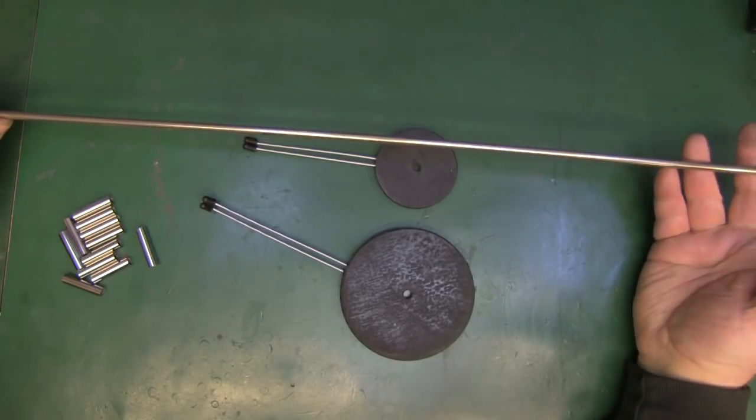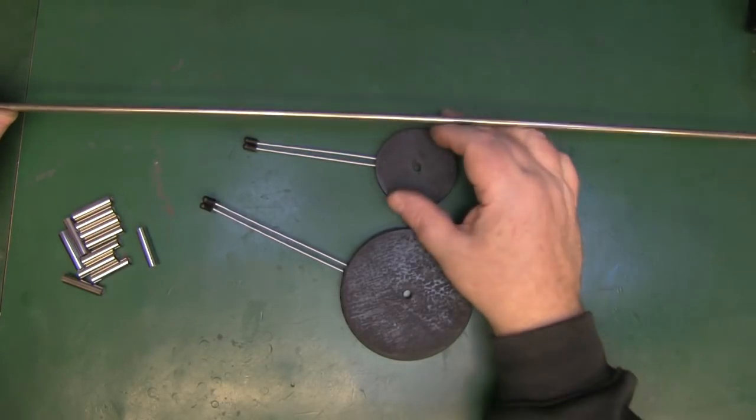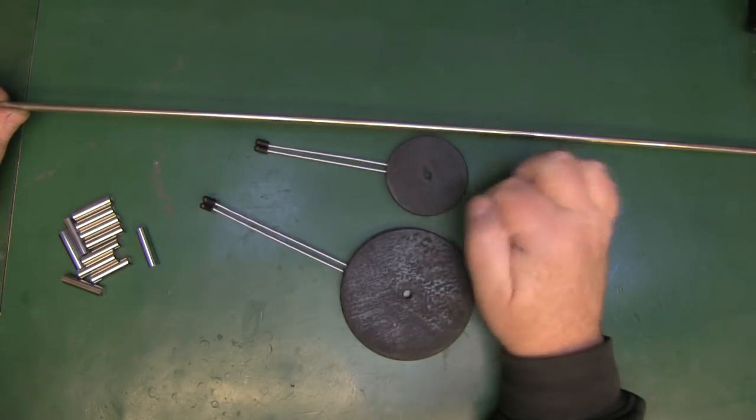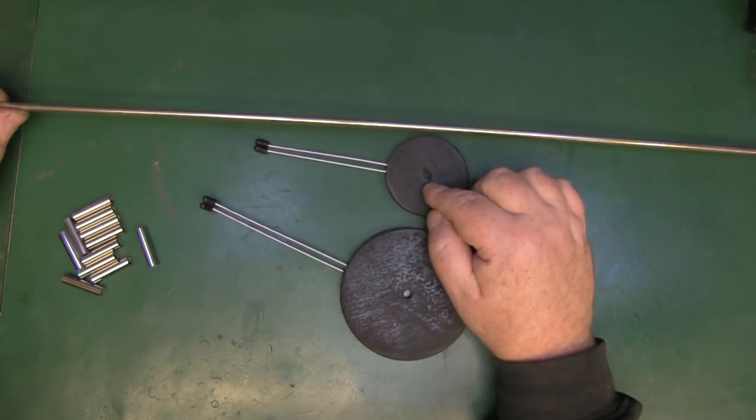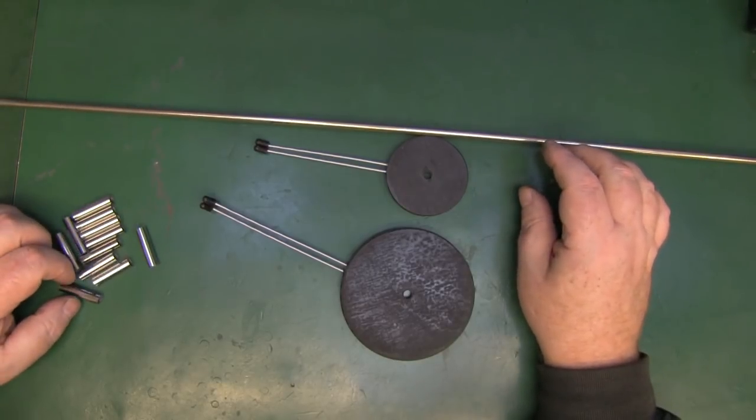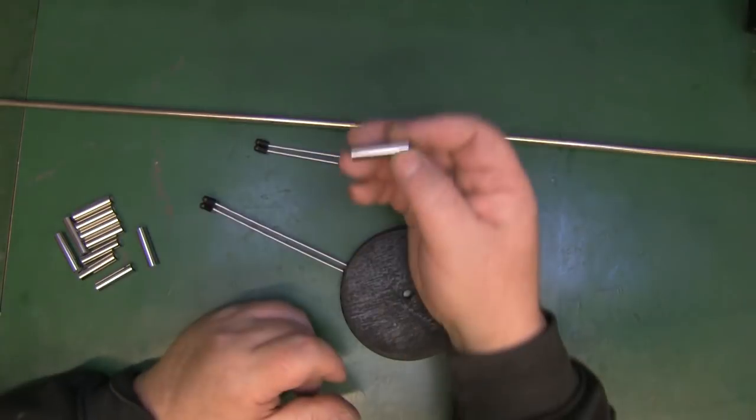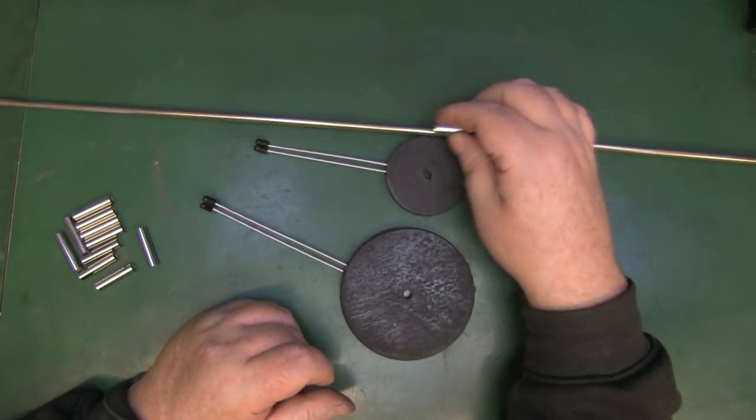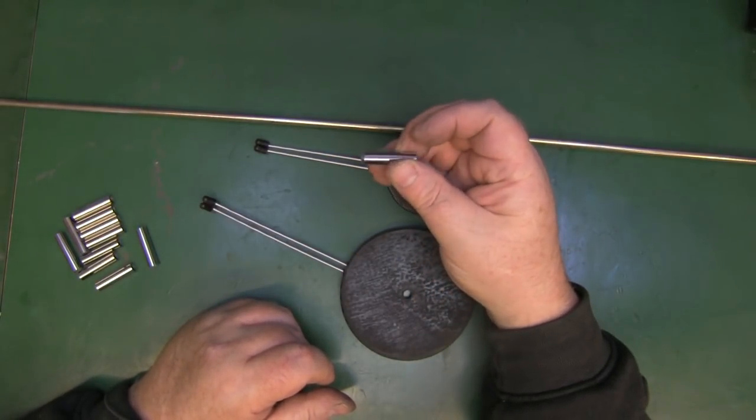I've got this rod here that I've saved from something—I can't remember what it actually came from—it just fits nicely in the hole that was left by the hole saw that I drilled in there. So everything's going to fit nicely onto this rod, and to space everything out I've just cut myself some tubing here slightly thicker than the rod and it'll just space everything out quite nicely.